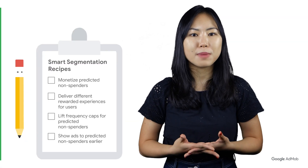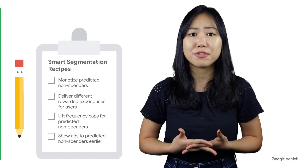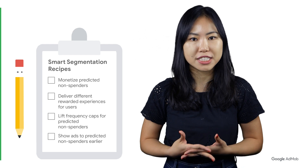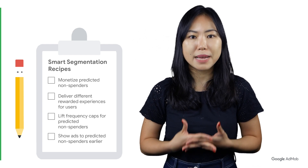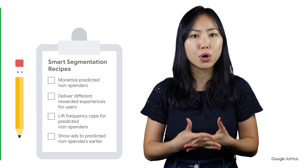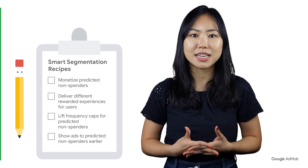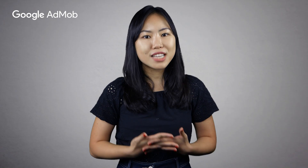And that's all we have for smart segmentation. In this video, we have shared with you the four different recipes to use the smart segmentation feature effectively. The ability to identify predicted spenders and non-spenders allows you to maximize your users' lifetime value and create tailored ads monetization flows for your users. Thanks for watching this Google AdMob tutorial. We hope you found it useful. Before you go, we'd like to share some resources to make your smart segmentation experience the best possible one. You can find many resources such as our AdMob Help Center and Developer's Guide on Smart Segmentation in the video description below. Be sure to subscribe to the Google AdMob channel for more best practices and tips on how you can grow your app further.